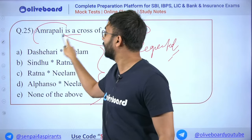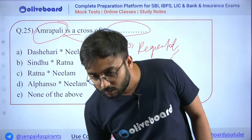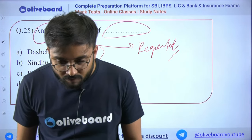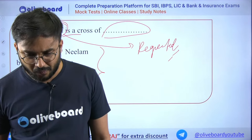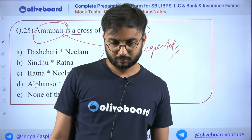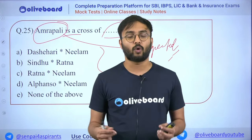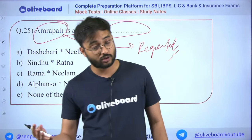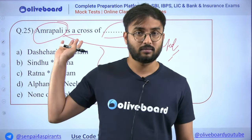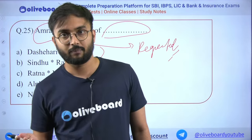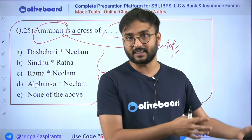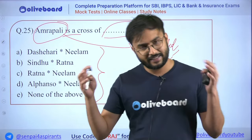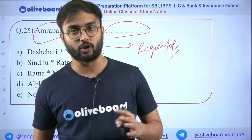Agriculture exams are obsessed with the Amrapali mango question. Trick to remember: ADN — Amrapali = Dasheri × Neelam. RNA is related to protein synthesis, DNA holds genetic information. In depth biotechnology will be covered in a dedicated lecture.